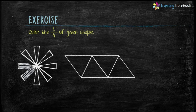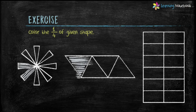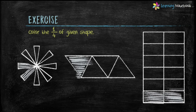Now the next shape has 4 parts, and we have to color one-fourth of this figure. So divide 4 by 4. We get 1. Therefore, color 1 part of this given figure. Now the last shape has 12 parts, and we have to color one-fourth of this figure. So divide 12 by 4, which is equal to 3. So color 3 parts of this figure.